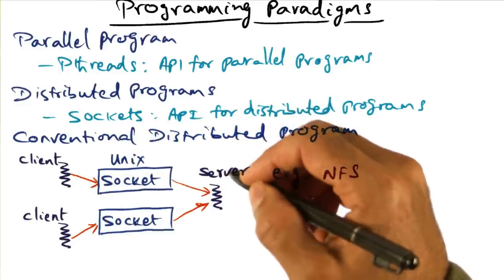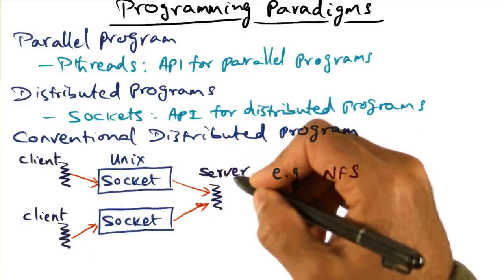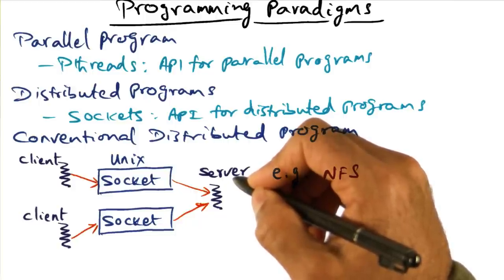But unfortunately, socket API is too low level, and it doesn't have the semantic richness needed for emerging novel multimedia distributed applications.